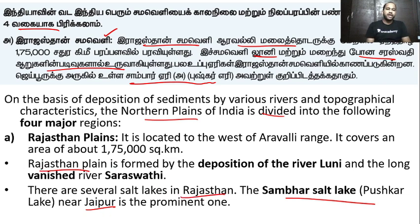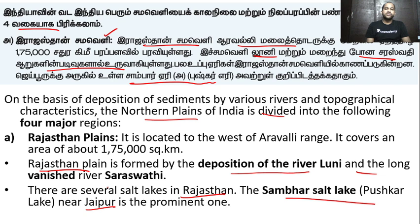In the Rajasthan Plains, there is a farm region. It is attributed to the Indus, Ganga, and Brahmaputra systems. There is a deposition of the Luni River. The long-vanished Sarasvati River is also present here — evidence of the Sarasvati River is found in the Vedas.